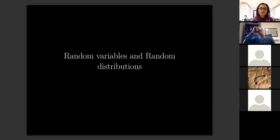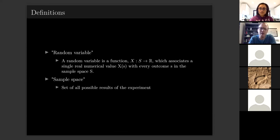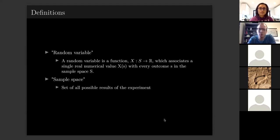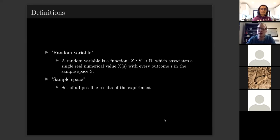Statistics is all about understanding randomness. A random variable is a function that converts a value into a real number. We do this all the time in medicine — we turn quality of life into numbers using questionnaires, we turn depression into a depression score. Numerating things is taken for granted, but it's the first stage of any statistical process.